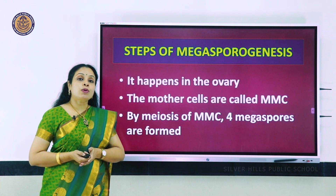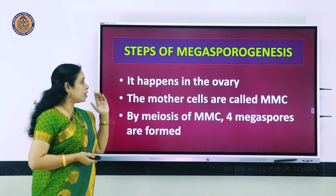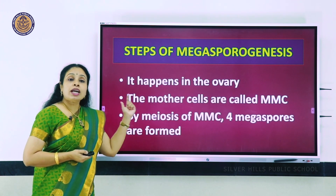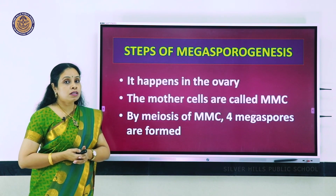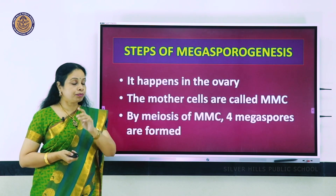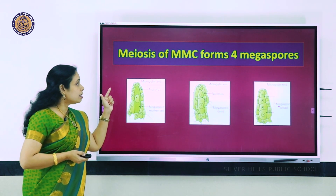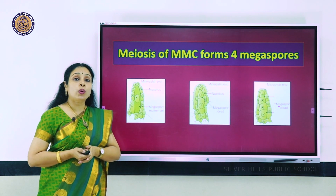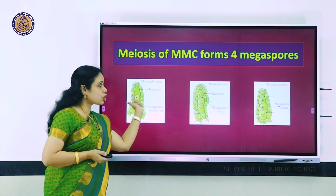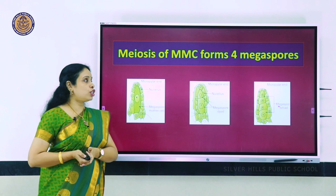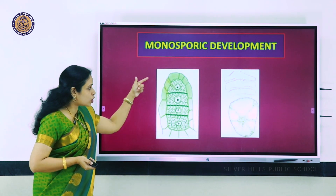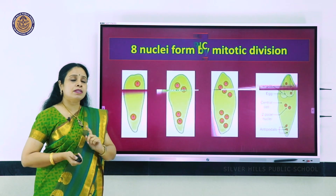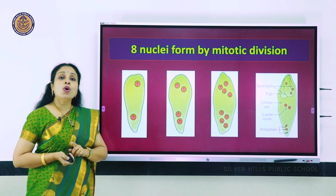The steps of megasporogenesis happen in the ovary from MMC. Each MMC divides by meiosis to form four megaspores - first meiotic division gives two cells, second gives four. Three of those four degenerate and only one develops; this is called monosporic development.